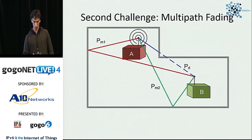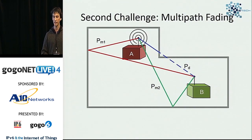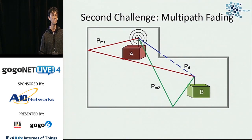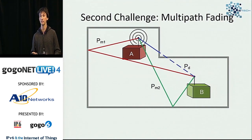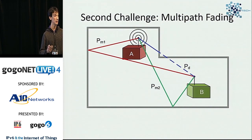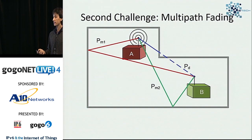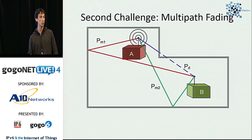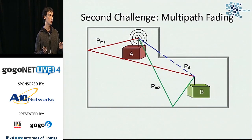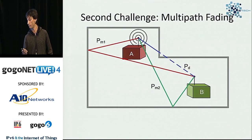The second challenge is multipath fading. This is related to the fact that waves bend when they collide with objects, or if there are metallic things around, they change their phase and become destructive interferences — the same wave can destroy itself because it's bending somewhere. This happens more with narrow-band radios, where the bandwidth is smaller, so this effect is much more pronounced.